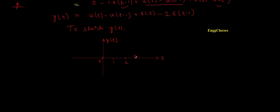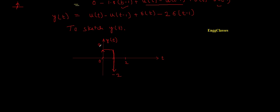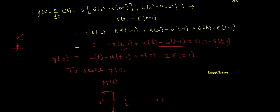How does the signal look? u(t) - u(t - 1) is a rectangular pulse from 0 to 1, height 1 — I can sketch that easily. To that I add δ(t), which is an upward arrow at t = 0. Then I subtract 2δ(t - 1), which is a downward arrow at t = 1 with amplitude -2, indicated below the axis at position 1.